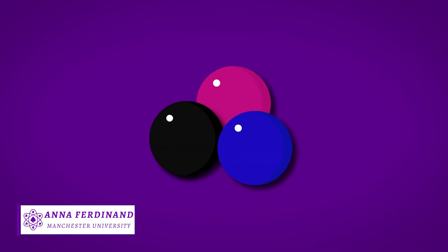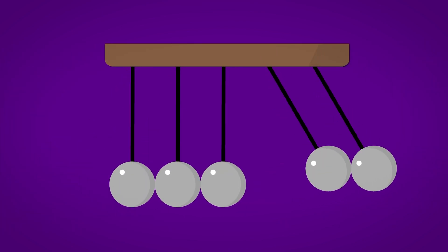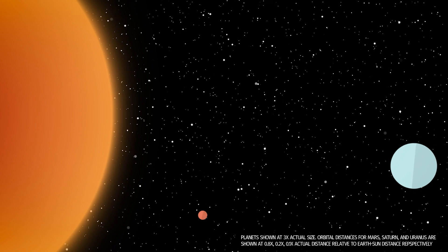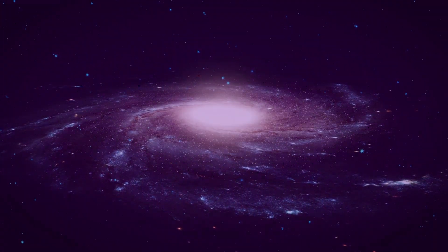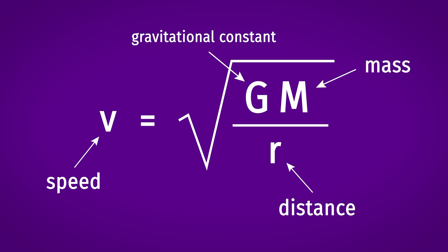To understand why the theory of dark matter was formed, we must first turn to the principles of classical physics. These explain the motion of objects ranging from the trajectories of footballs to the orbits of planets in our solar system. By using classical physics, it's possible to predict the speeds of planets and stars in orbit. A simple equation relates these speeds to the distance at which the planet or star is orbiting and the total mass which it orbits around.